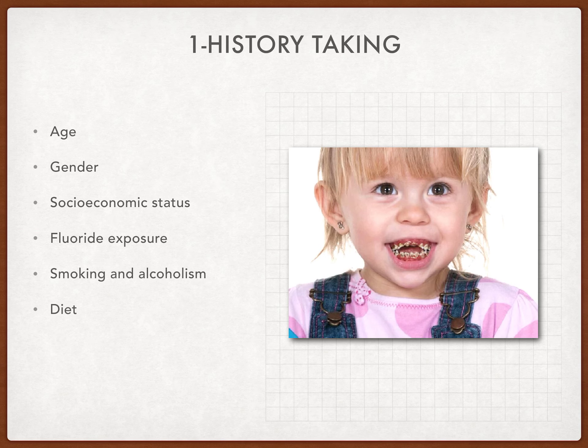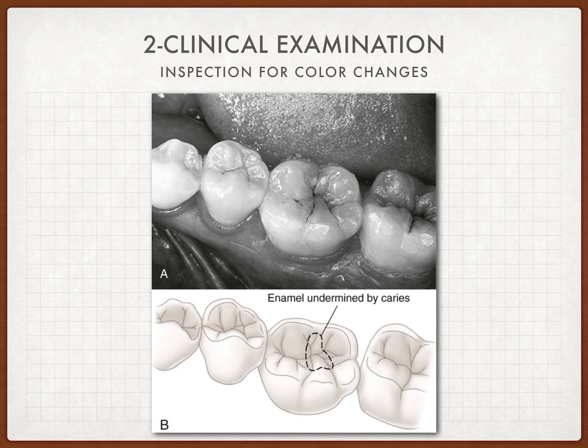The clinical examination is composed of four parts: inspection, palpation, percussion, and auscultation. During the diagnostic procedure for caries, we use inspection and palpation only. Inspection is very important — as we can see in this picture, there will be a color change in the carious lesion.